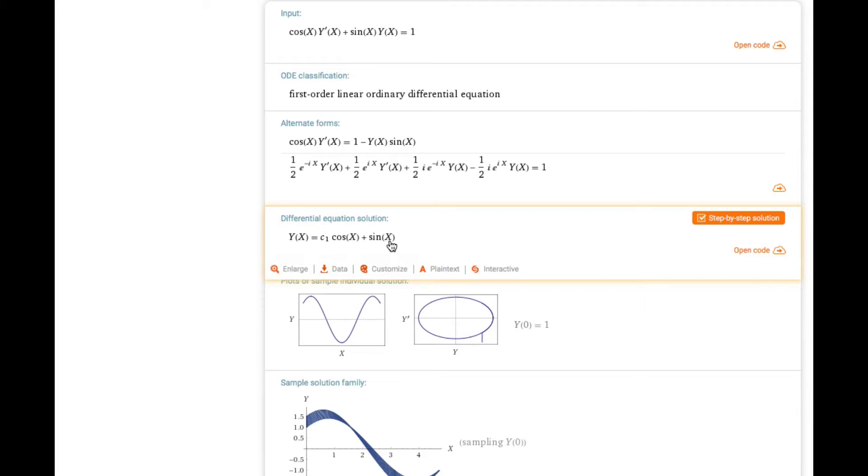To check the initial value problem, what you have to do is put 'and', and we also did the initial value problem previously, that is y of pi is equal to 2. So to write pi you just have to write pi, that is equal to 2, and then if you enter again.